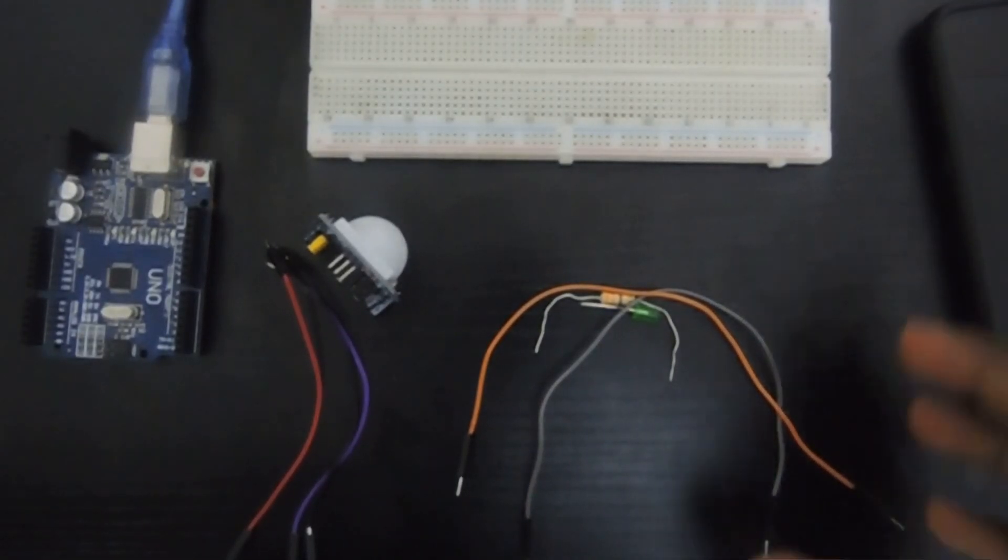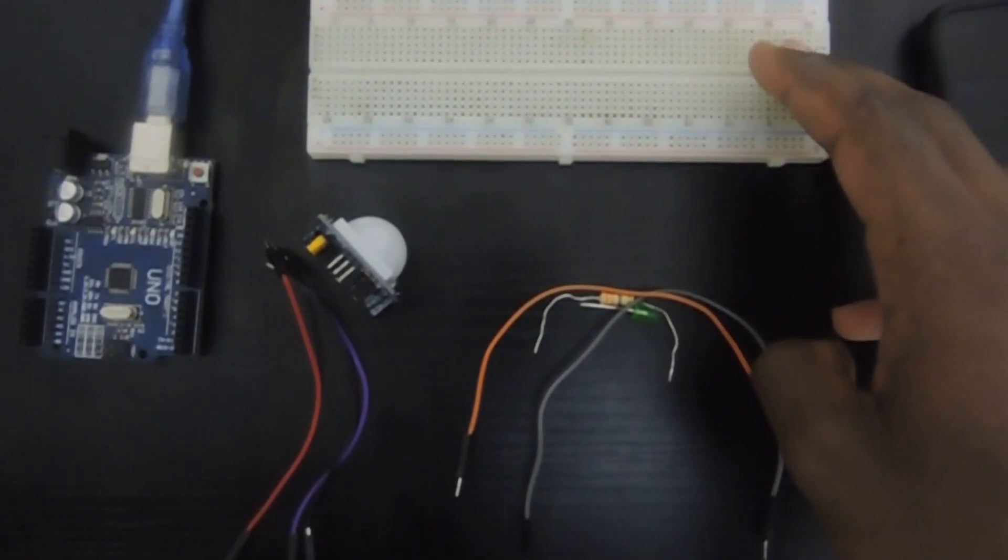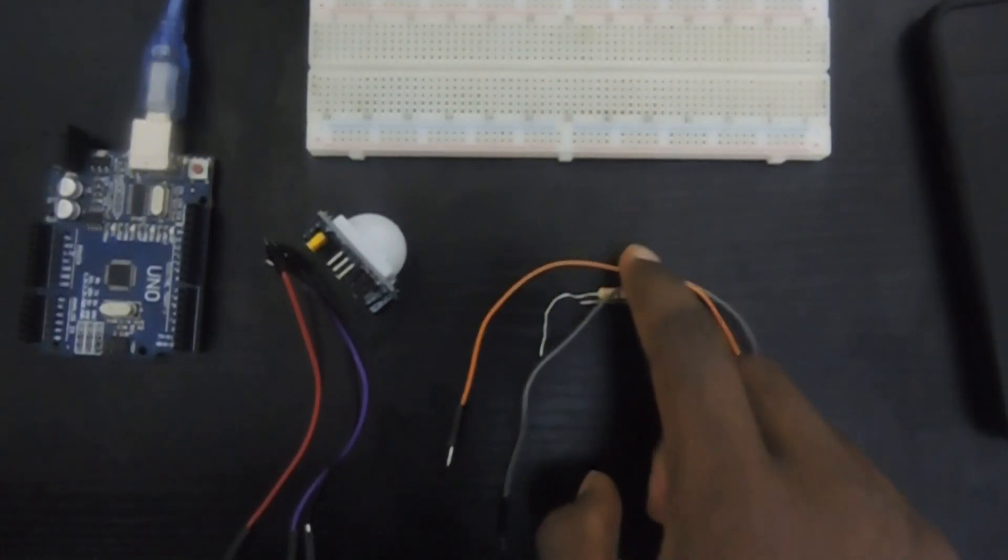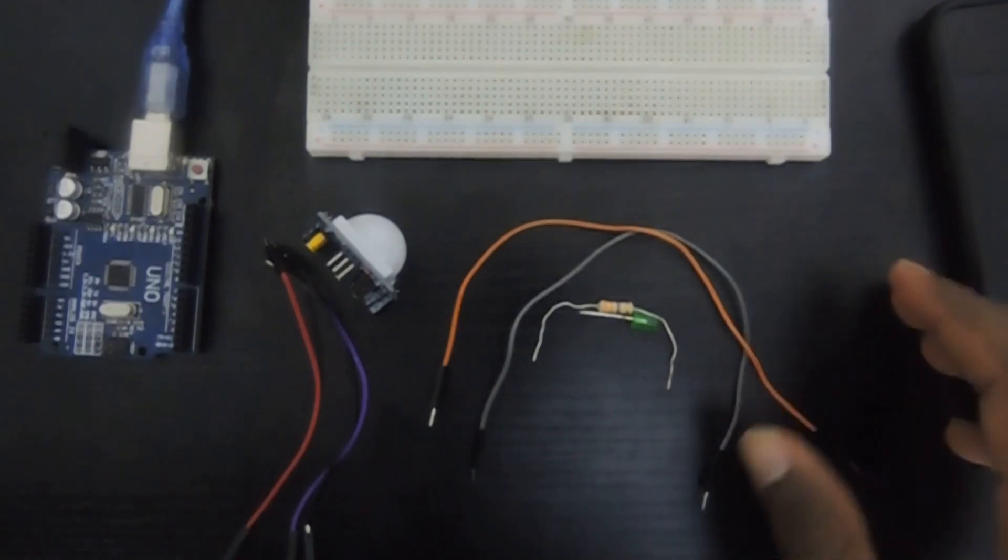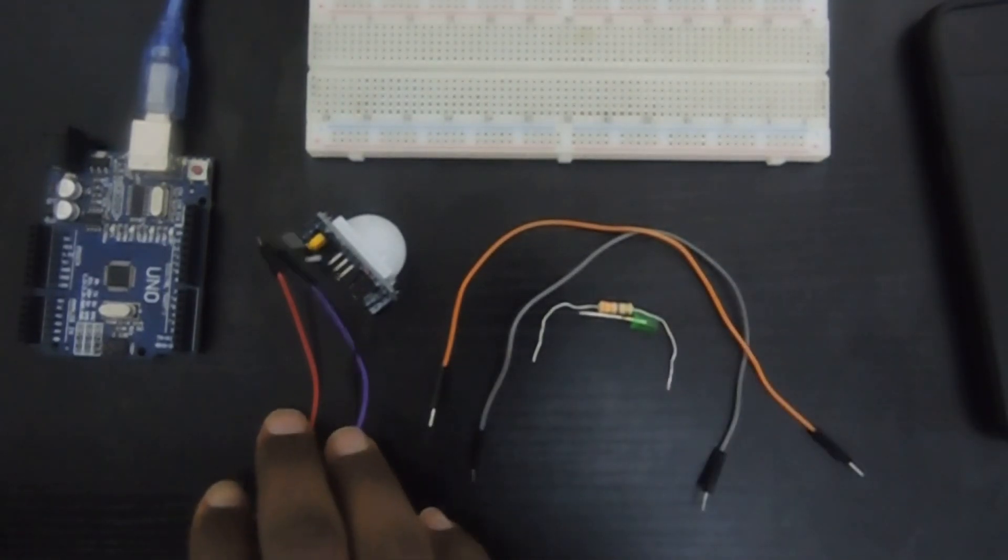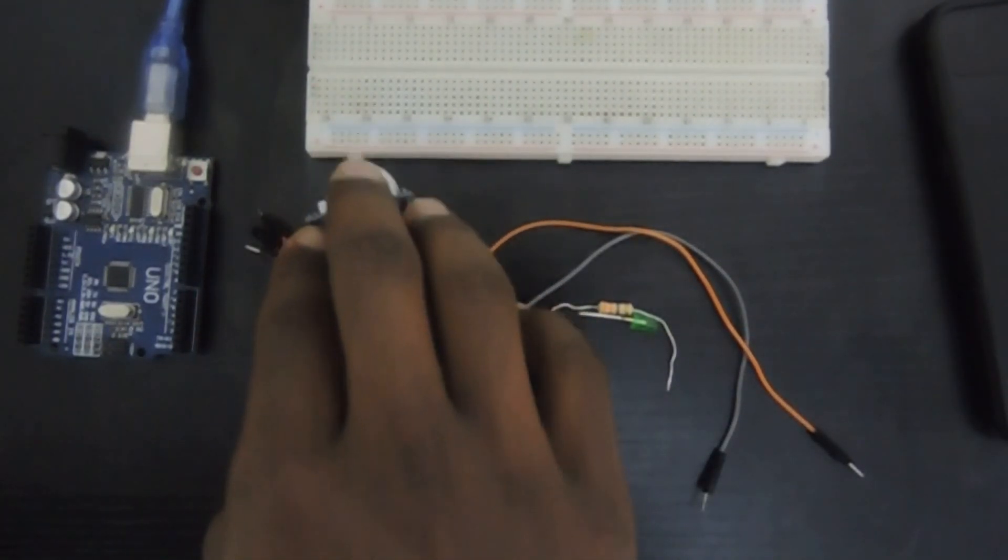For the components I'm going to be utilizing the breadboard. You're going to need an LED and a resistor. Along with that I'm going to be using two male to male jumper wires, three female to male jumper wires, the sensor and the Arduino.